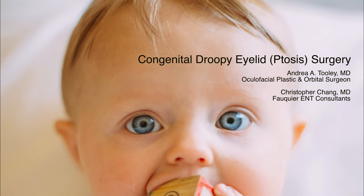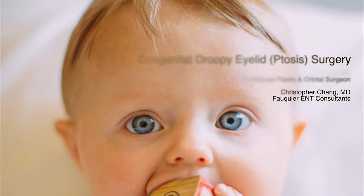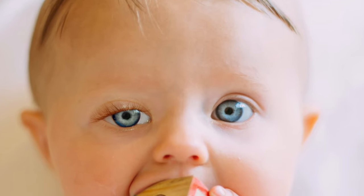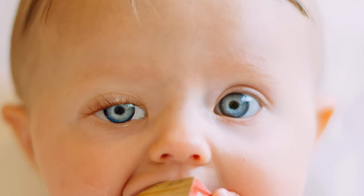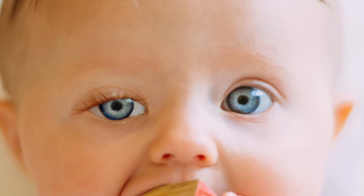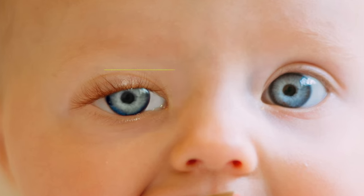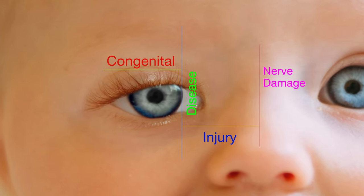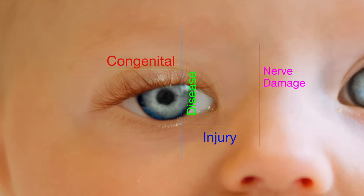Normal eyelid movement is required for proper lubrication of the eye as well as protection from airborne irritants. However, when the eyelid does not fully open, it can not only obstruct vision, but creates a cosmetic facial asymmetry. A droopy eyelid or ptosis can be congenital or acquired through injury, disease, or nerve damage.